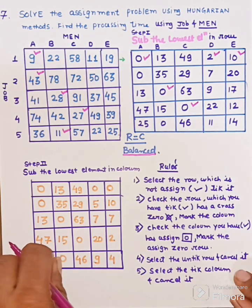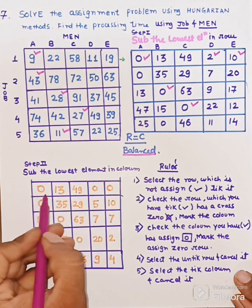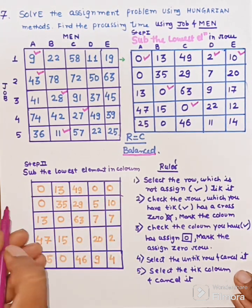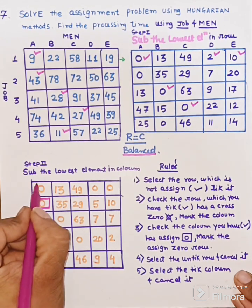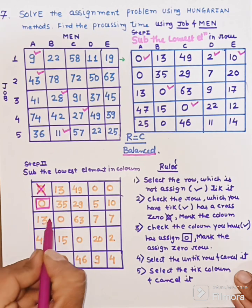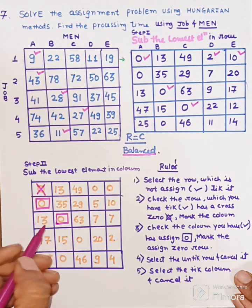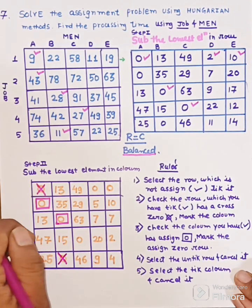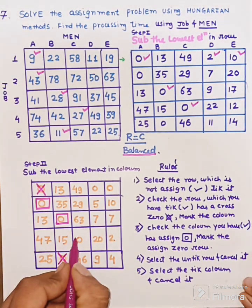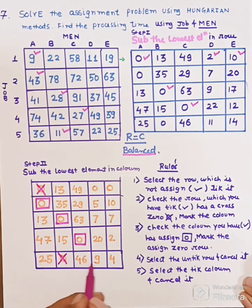Now we will do the assignment. Find the single zero in each row. There is no single zero in the first row. In the second row, there is a single zero — mark it in a square box and cross the zero in that column. Similarly in the third row, there is a single zero — mark the zero and cancel the zero in the column. In the fourth row, there is a single zero. In the fifth row, there is no zero.